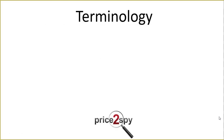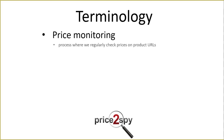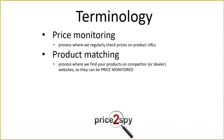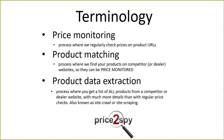Price monitoring is a process where we regularly check prices on product URLs that we have matched earlier. Product matching is a process where we find your products on competitor or dealer websites so they can be price monitored. Product data extraction is a process where you get a list of all products from a competitor or dealer website with much more details than with regular price checks. This service may also be referred to as crawl or scrape, but it's actually much more than that. To put it simply, if you'd like to discover newly added products on certain websites, then this is what you need.